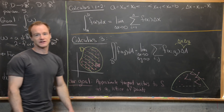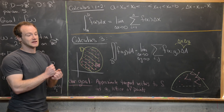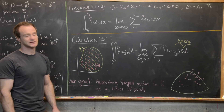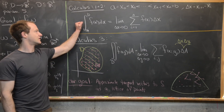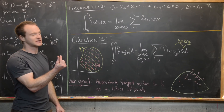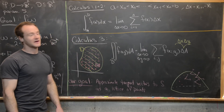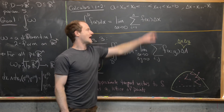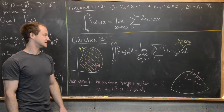We called the parts of the partition x₀, x₁, x₂, up to xₙ, and the length of each piece we called delta x, which was xᵢ₊₁ minus xᵢ. That allowed us to define the definite integral as the limit as delta x goes to 0 of the sum of f evaluated at xᵢ times delta x — the value of f on one piece of the partition times the length of that piece.